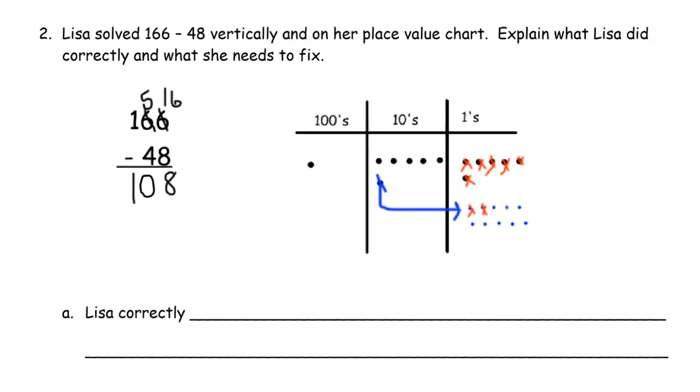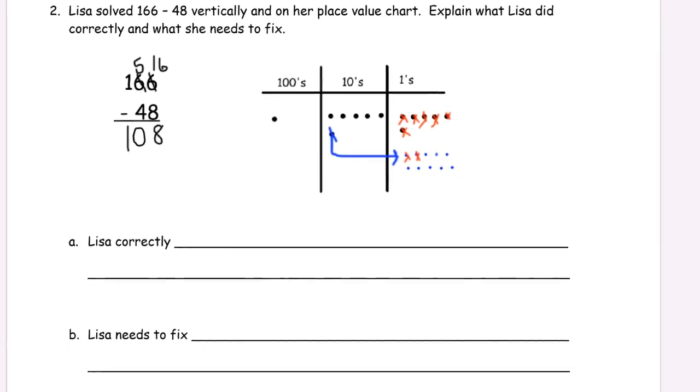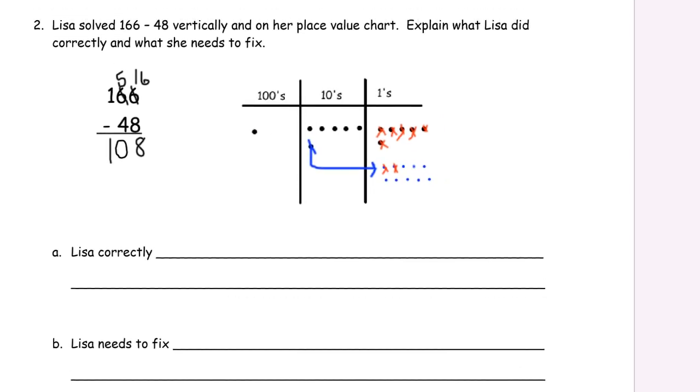Now we have a little fractured math to investigate. Lisa solved 166 minus 48 vertically and on her place value chart. Explain what Lisa did correctly and what she needs to fix. Well, let's look at her vertical method. She had 166 minus 48. So she's got her ones and her tens matched up there. She didn't have enough ones to subtract 8, so she had to unbundle a 10. She should have 5 left. She does. 10 more ones is 16. Good. Then there's subtraction. 16 minus 8 is 8. 5 minus 4 shouldn't be 0. That should be a 1. So there's a mistake that she made right there.